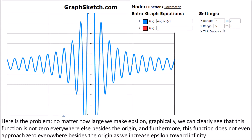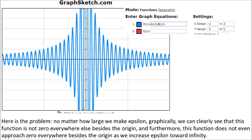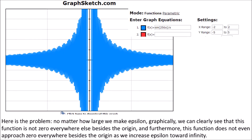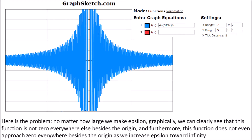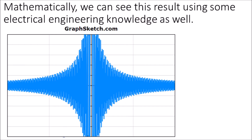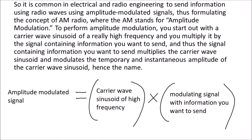Here is the problem. No matter how large we make epsilon, graphically we can clearly see that this function is not 0 everywhere else besides the origin, and furthermore this function does not even approach 0 everywhere besides the origin as we increase epsilon toward infinity. Mathematically, we can see this using electrical engineering knowledge. It is common to send information using amplitude modulated signals, formulating the concept of AM radio, where AM stands for amplitude modulation. To perform amplitude modulation, you start with a carrier wave sinusoid of a really high frequency and multiply it by the signal containing information you want to send.